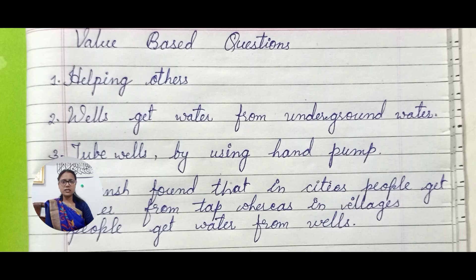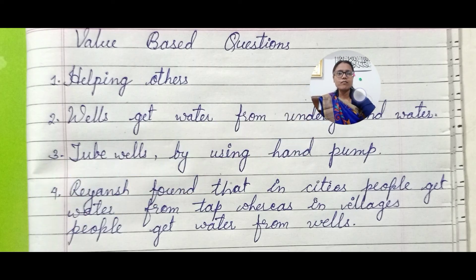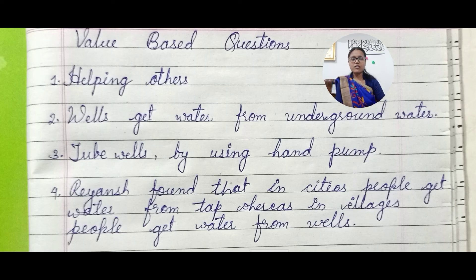Number 1: helping others. Number 2: wells get water from underground water. And third — which way can we draw underground water — that is tube wells, which work by using hand pumps. And the fourth answer: Riyanj found that in cities people get water from tap, whereas in villages people get water from wells. I hope you have understood all the answers and will find it easy to write them in your notebooks.